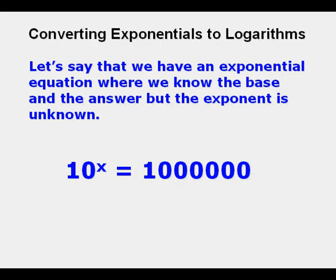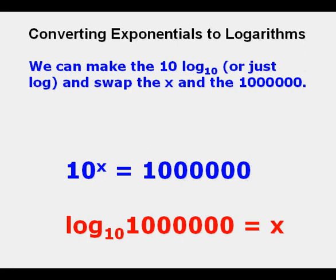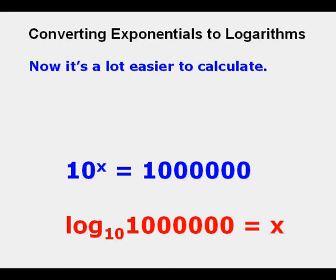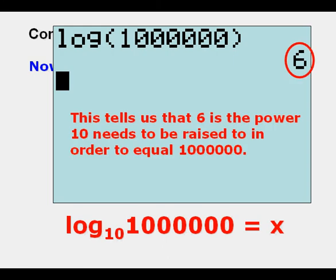Let's say that we have an exponential equation where we know the base and the answer but the exponent is unknown. Here we have 10 to the power of x equals 1 million. We can make 10 into the log base 10 or just log and swap the x and the 1 million. And here we do that below. And now it's a lot easier to calculate. So we go to our calculator. Log of 1 million equals 6. This tells us that 6 is the power 10 needs to be raised to in order to equal 1 million.